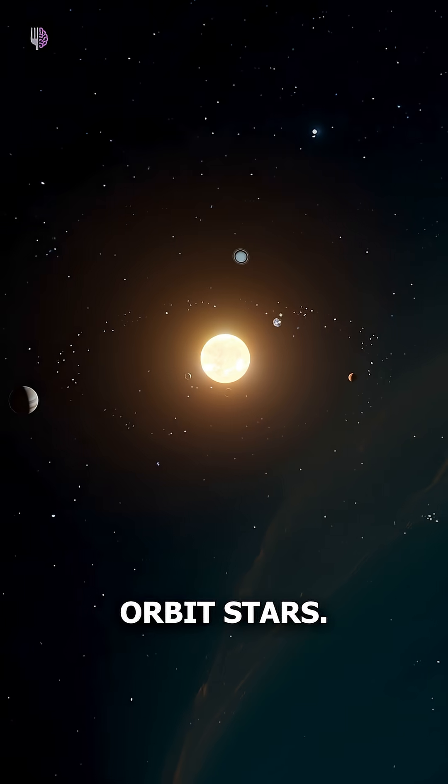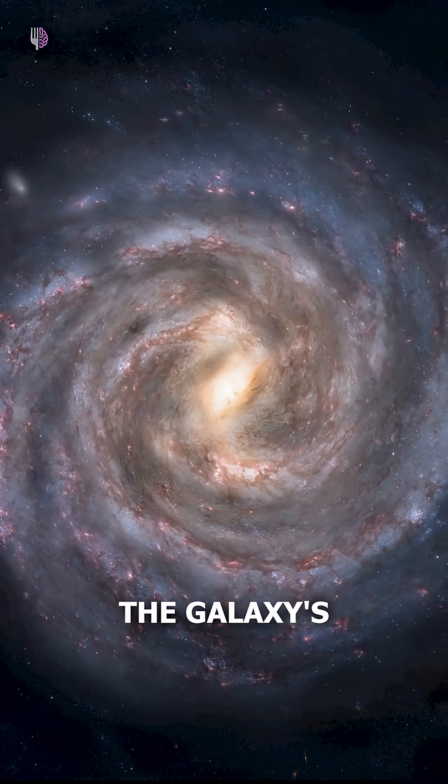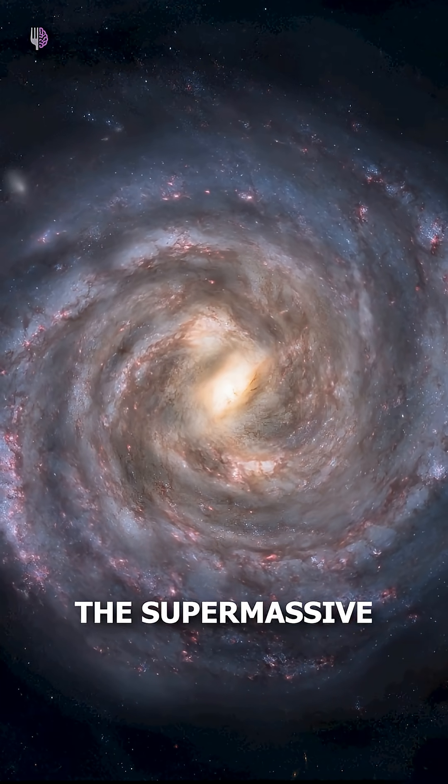Planets orbit stars. Stars orbit within star systems. But entire star systems? They orbit the galaxy's center of mass, which is often located near the supermassive black hole.